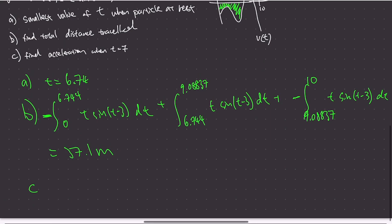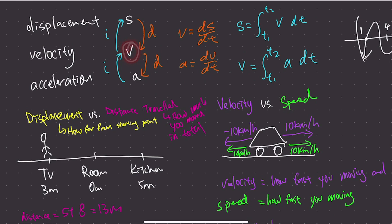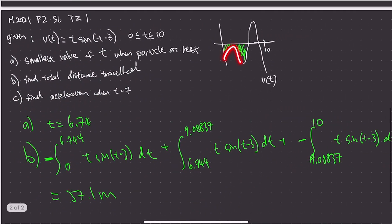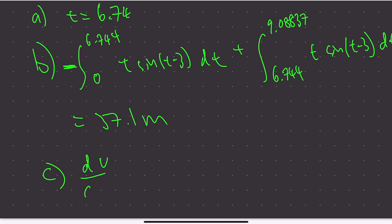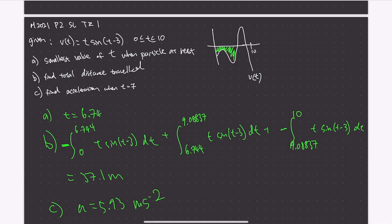Part C asks for acceleration when t = 7. We're given V and need to find A, so we differentiate: A = dV/dt. Using your calculator's derivative function at t = 7, the acceleration equals 5.93 meters per second squared. That's it for this question and this video — if you have questions about kinematics, put them in the comments, and remember to subscribe and like!